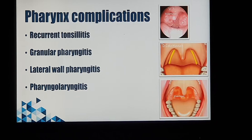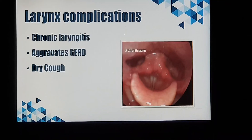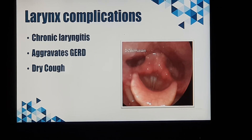Pharynx-related complications: sinus infection can spread to the tonsils, leading to recurrent or chronic tonsillitis. The area just behind the tonsils is the pharynx, and you can have recurrent pharyngitis, chronic pharyngitis, or granular pharyngitis. If both the pharynx and larynx are involved at the same time, it is termed pharyngolaryngitis. Sinus infection can also lead to chronic laryngitis, and if the patient suffers from acidity or gastroesophageal reflux disease, that may get aggravated.